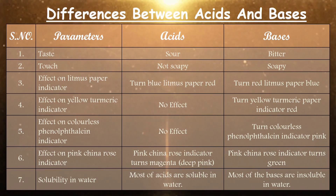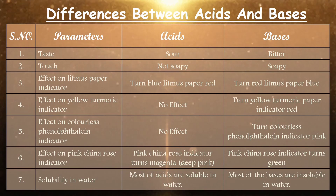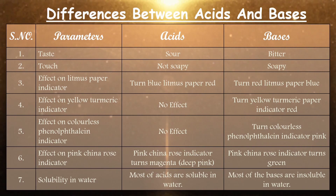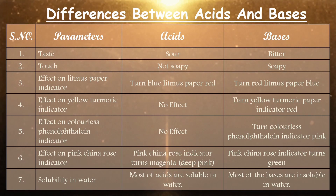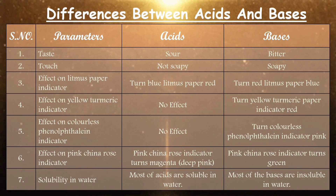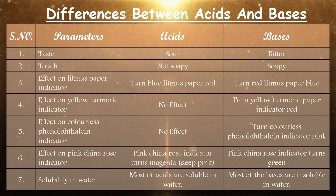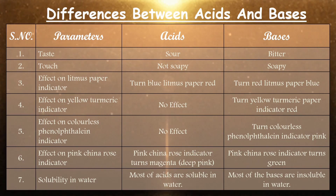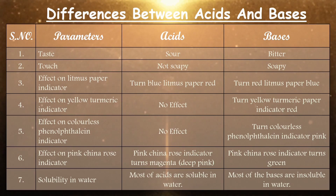Number six: effect on pink china rose indicator. Acidic solutions turn pink china rose indicator magenta or dark pink, while basic solutions turn pink china rose indicator green. Number seven: solubility in water. Most acids are soluble in water, but most bases are insoluble in water.